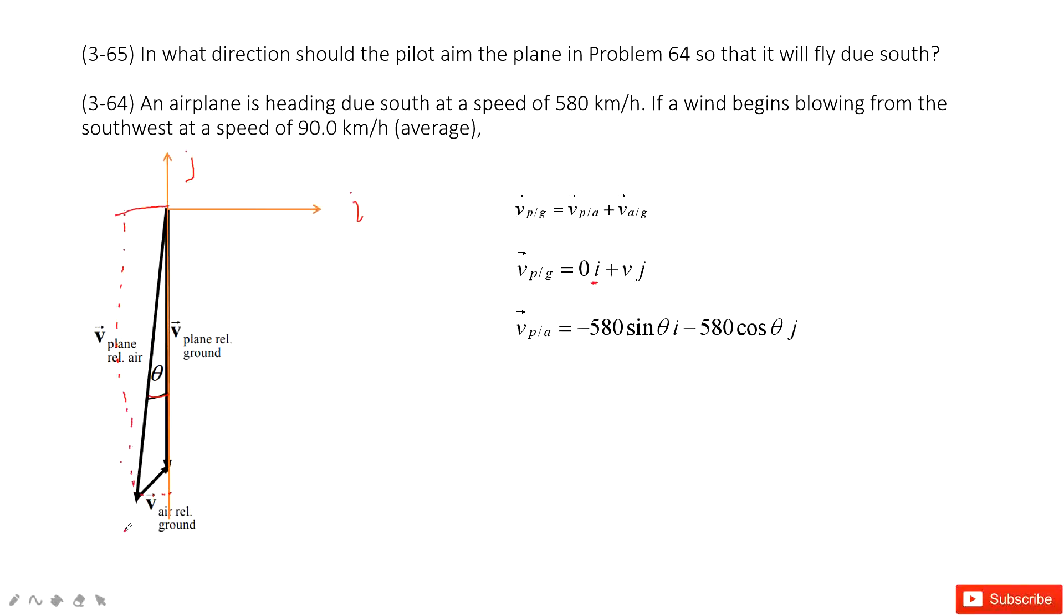So this side is V. This is magnitude 580 times sine theta. So this is this one and the negative side there. And the next one is this magnitude times cosine theta and the negative side there.